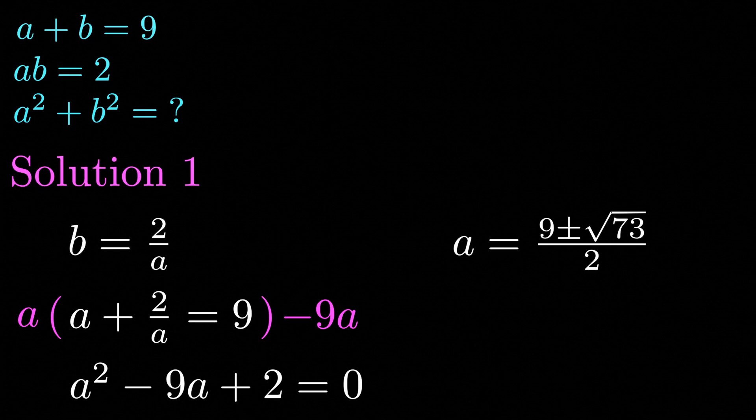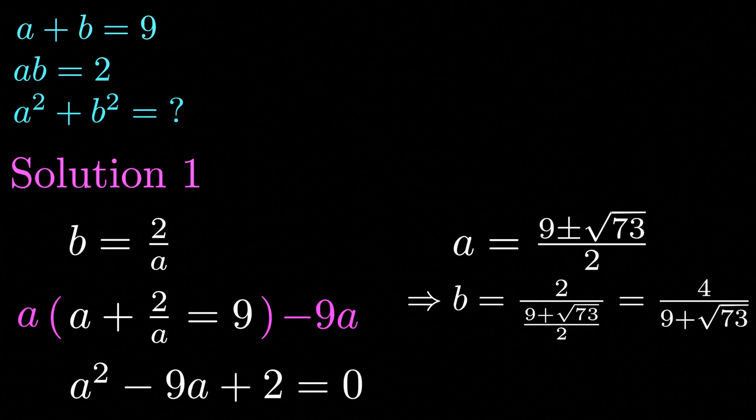Anyway, substituting our value for a into b is equal to 2 divided by a, we get that b is equal to 2 divided by 9 plus the square root of 73 divided by 2, which simplifies to 4 divided by 9 plus the square root of 73.